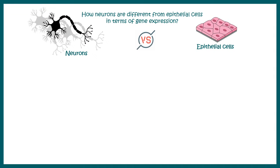Now let's get back to our question and try to understand microarray step by step. So we are trying to understand that how neurons are different from epithelial cells in terms of gene expression. Are there unique genes that are expressed by one cell but not the other? These are our questions. So we first extract the total RNA from neurons and the epithelial cells.